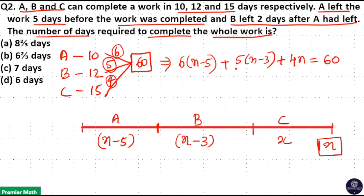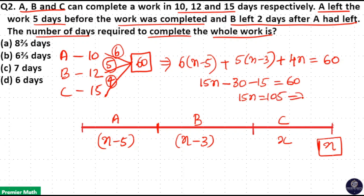Expanding: 6X + 5X + 4X = 15X, minus 30 minus 15 = minus 45, which equals 60. So 15X = 105, meaning X = 7 days. So option C is your answer.